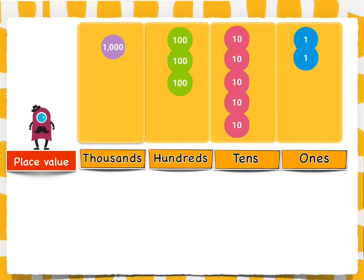Let us look closely at the place value chart. How many ones are there? Correct! There are two ones.